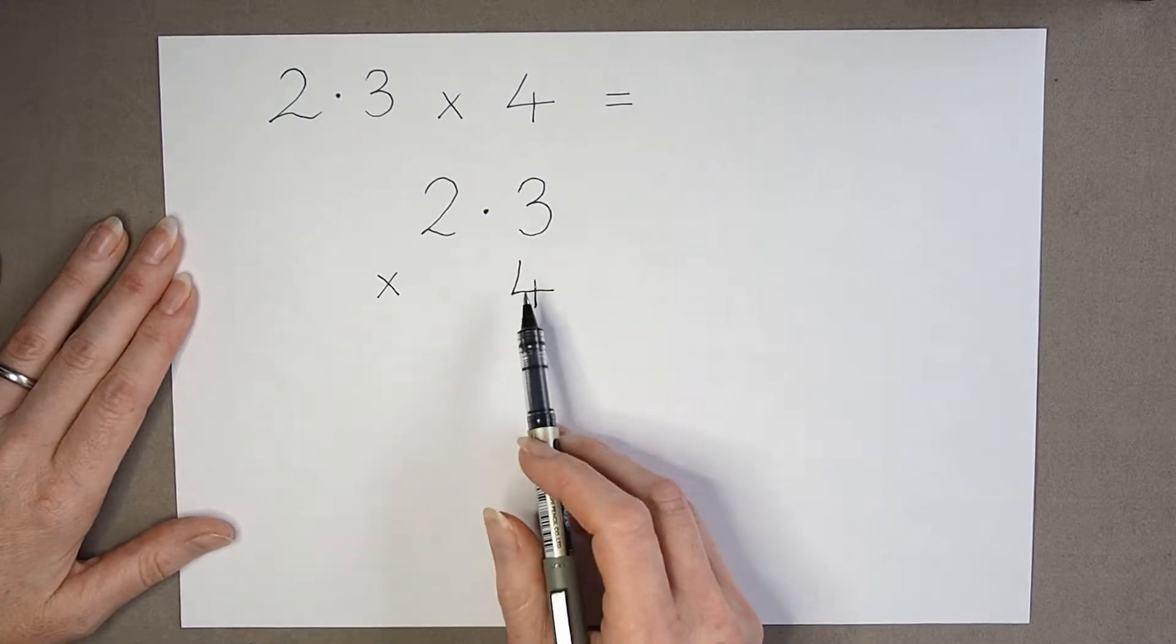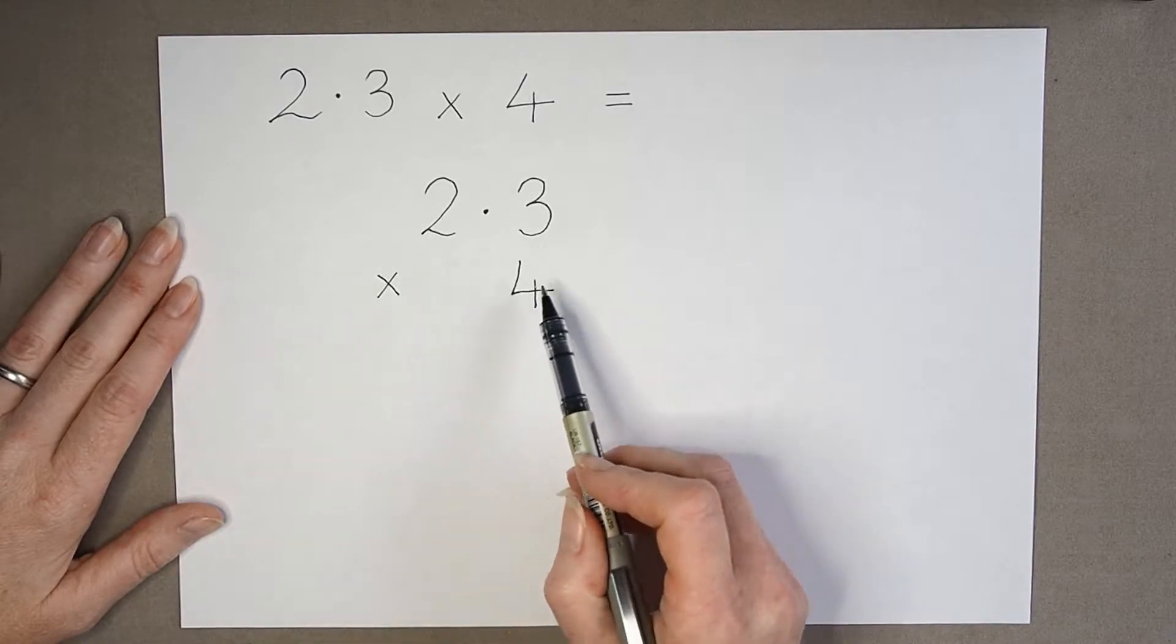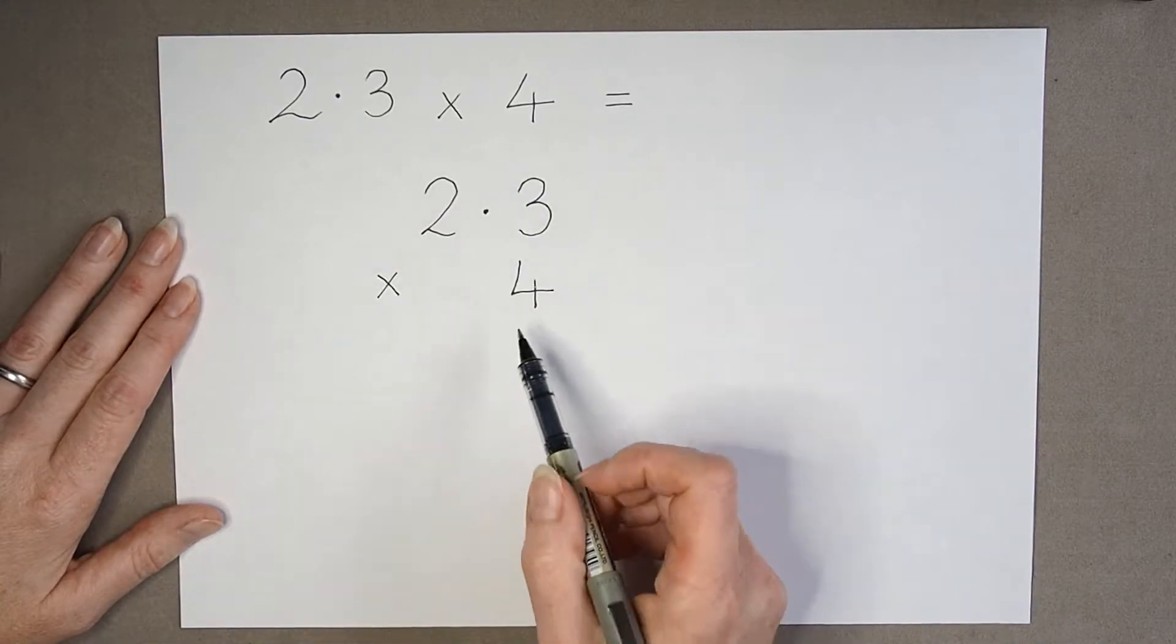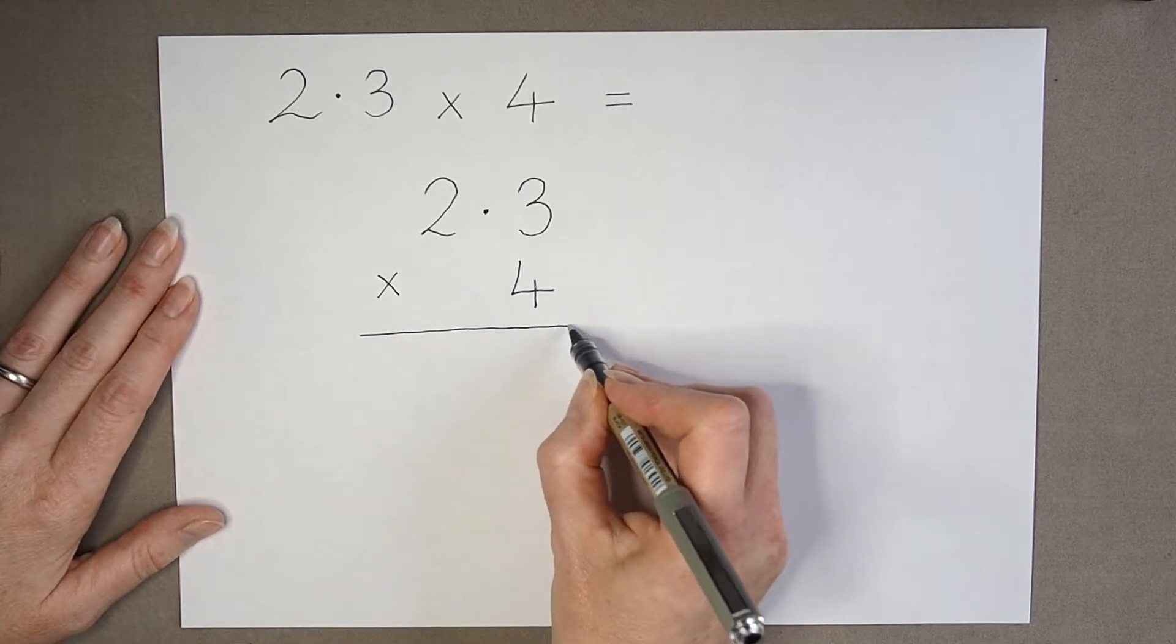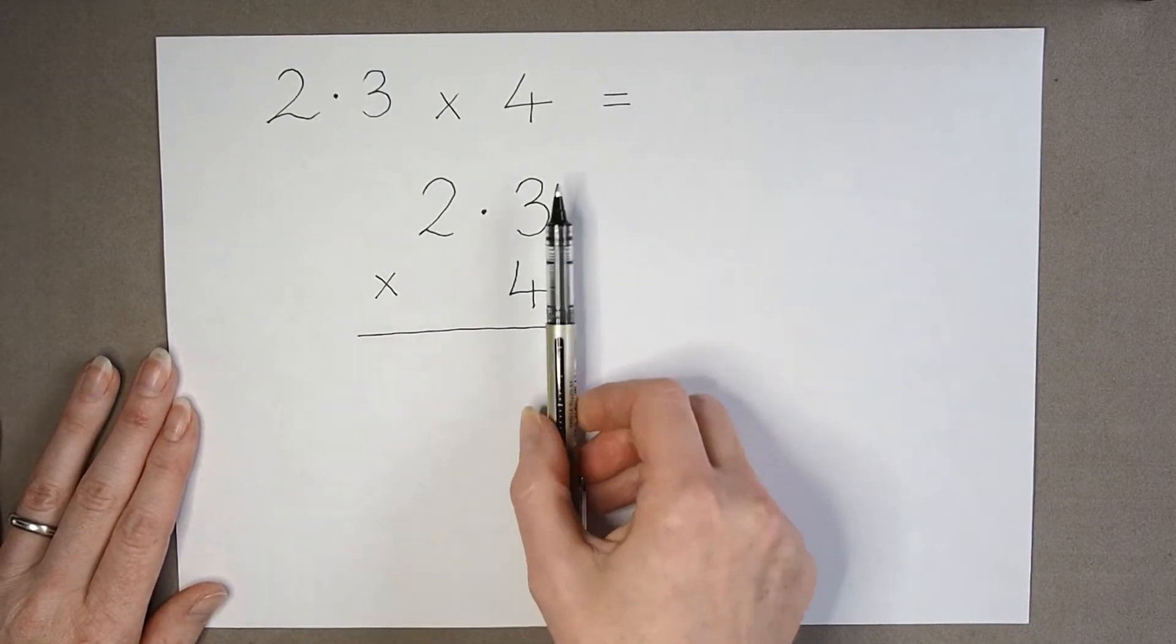Now, the only thing I've done differently here is I've not lined my four units up with the two units. Instead I've kept my calculation so that it looks like it would normally look with the right hand side lined up.